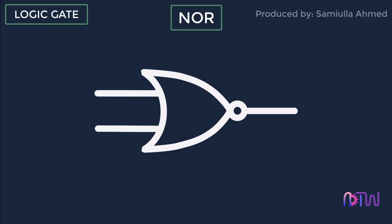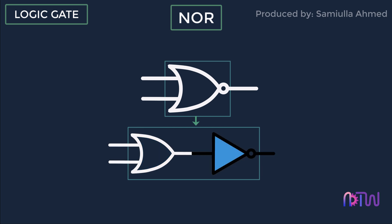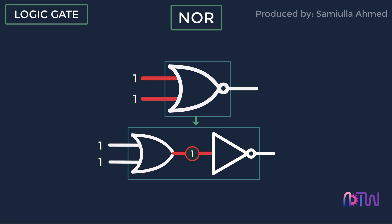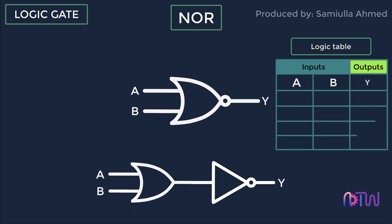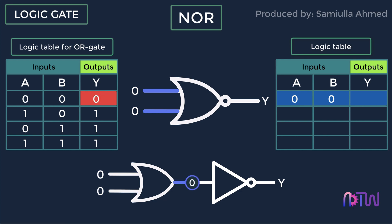Our next logic gate is the NOR gate. The NOR gate is the combination of the OR gate and the NOT gate. The output of the OR gate passes through the NOT gate, hence the output gets reversed — if the output of the OR gate is one, after passing through the NOT gate the output will be zero. The NOR gate provides output opposite to the OR gate. For the first input A equals zero and B equals zero, the OR gate output is zero, but after passing through the NOT gate, the final output is one.